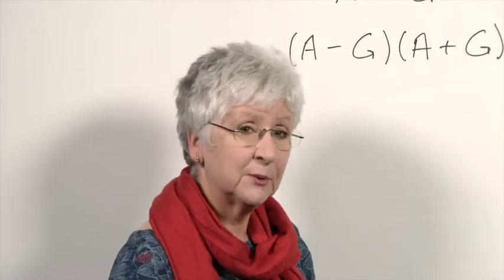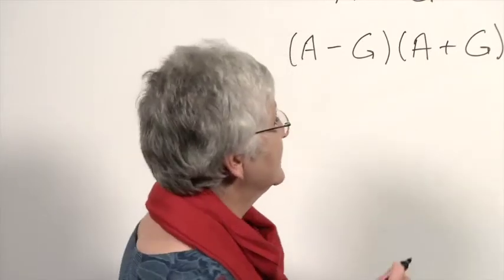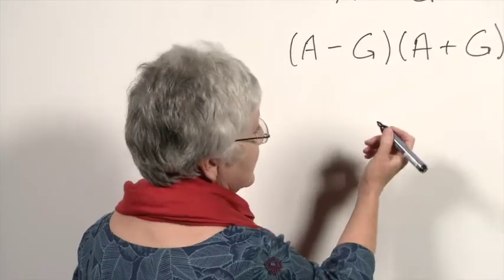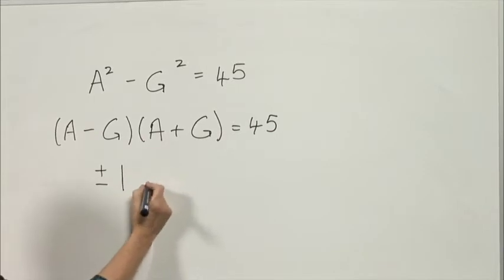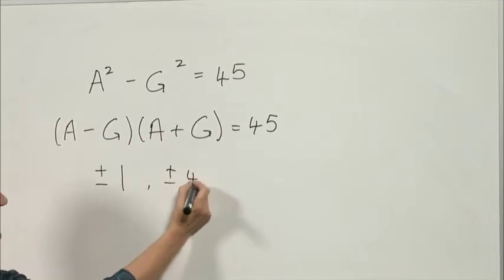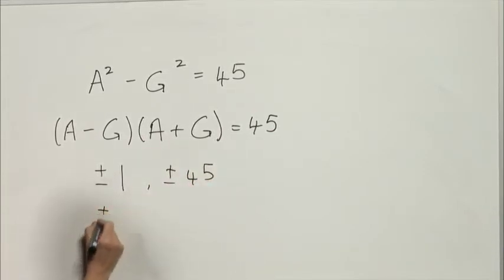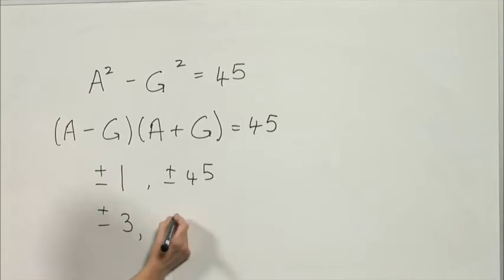Now we mustn't forget that we have negative integers as well as positive integers, and so we can see that the factors of 45 are plus or minus 1 paired with plus or minus 45, plus or minus 3 paired with plus or minus 15, and plus or minus 9 paired with plus or minus 5.